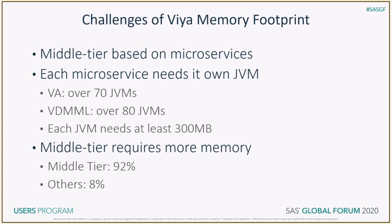SAS Viya middle tier requires more memory. Further, it takes a high ratio of total footprint. For example, for SAS Viya VA, the middle tier takes up to 92% of total footprint and the other tiers now take only 8%.